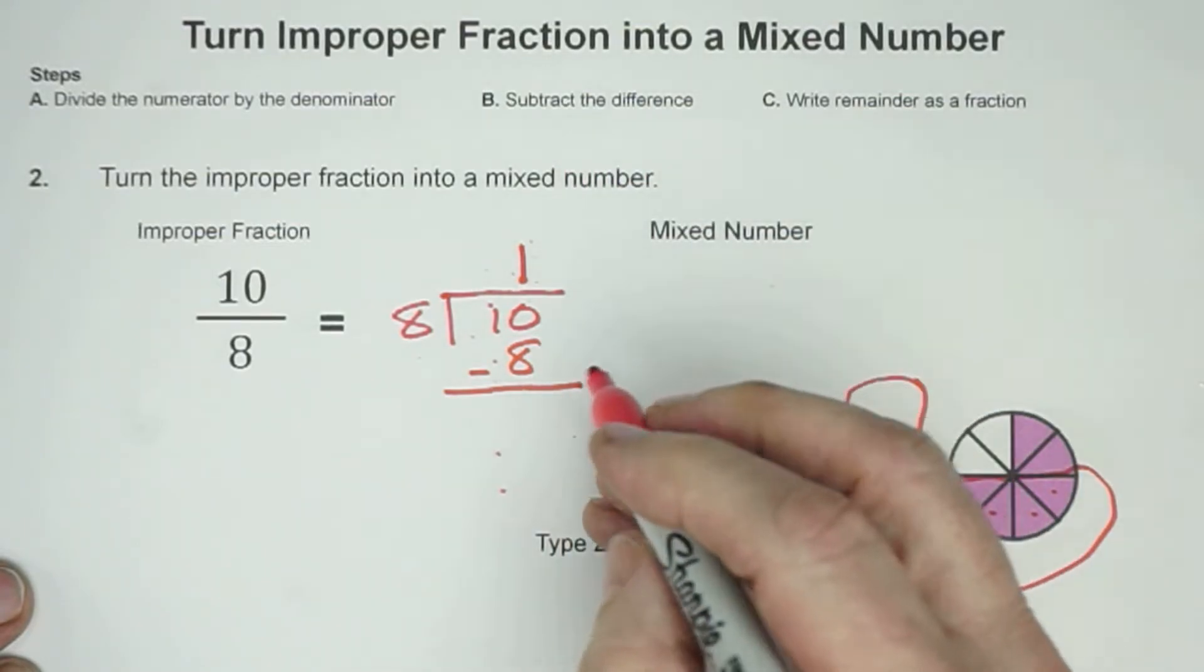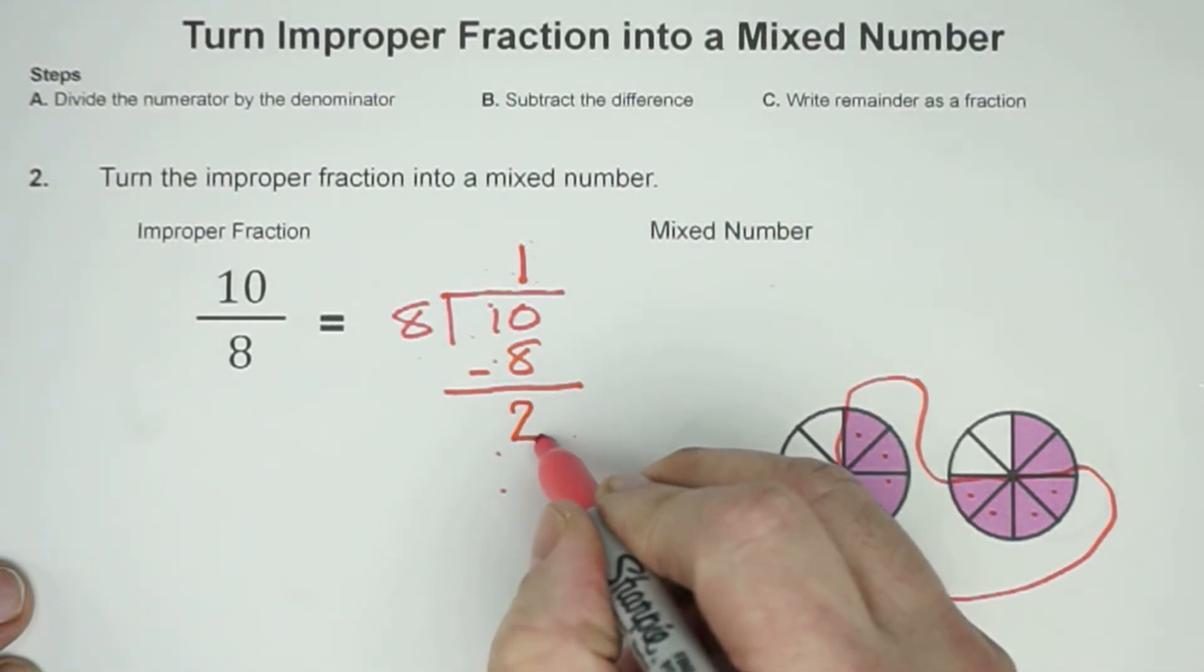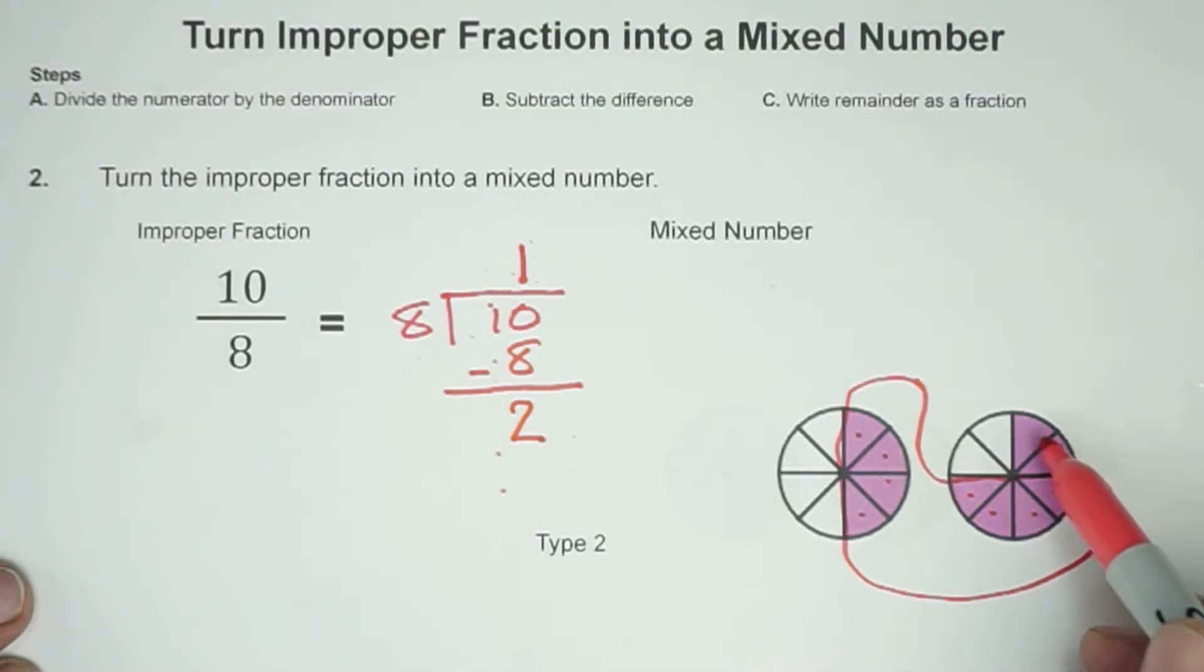And so 1 times 8 would be 8. And then we said we subtract. 10 minus 8 is equal to 2. And you can see that right here where we have our 2.